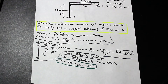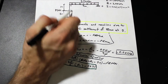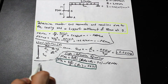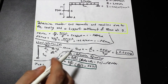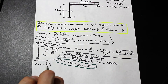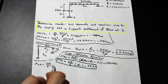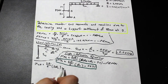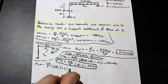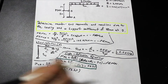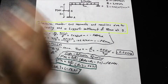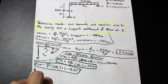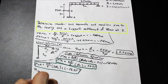The second slope deflection equation is MCA, starting from C looking toward A. MCA equals 2EI over 6 times (2θ_C + 0 − 0) plus FEM_CA, where FEM_CA equals negative 56.25. So MCA equals (2EI/6)(2θ_C) minus 56.25.